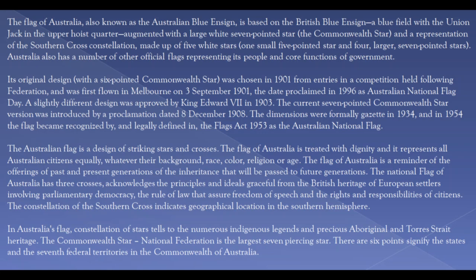The flag of Australia is a reminder of the offerings of past and present generations and of the inheritance that will be passed to future generations. The national flag of Australia has three crosses, acknowledging the principles and ideals drawn from the British heritage of European settlers, involving parliamentary democracy, the rule of law, freedom of speech, and the rights and responsibilities of citizens.